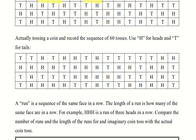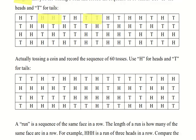So, when we look at this, we can see that there is a lot of structure in it. So, what I mean by that is, there's a lot of runs. And what is a run? It's the same head or tail in a row. So, a run is a sequence of the same face in a row. The length of a run is how many of the same face are in a row. For example, HHH is a run of three heads in a row. So, when we compare the actual coin toss with the imagined coin toss, we see quite a few differences. So, let's point out some of those.